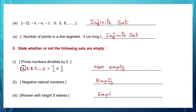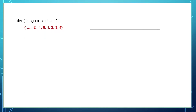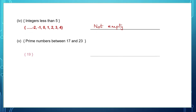Integers less than 5: these are all the integers less than 5, and before minus 2 there are many more integers. So this is a set which has elements in it — it is not an empty set. Prime numbers between 17 and 23: there is one prime number, 19. So this is not an empty set — it has one element in it.